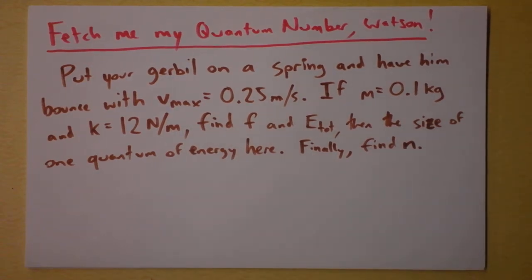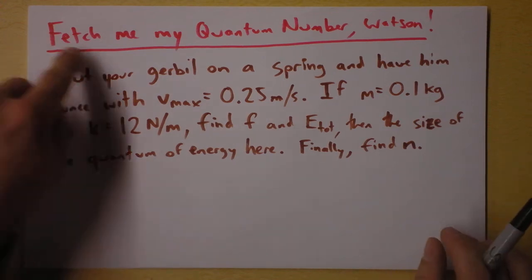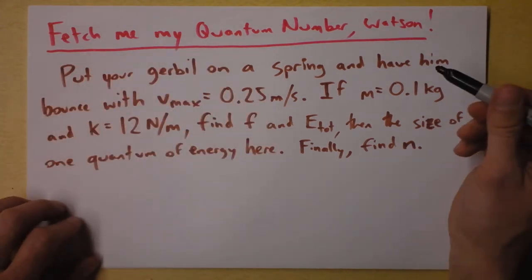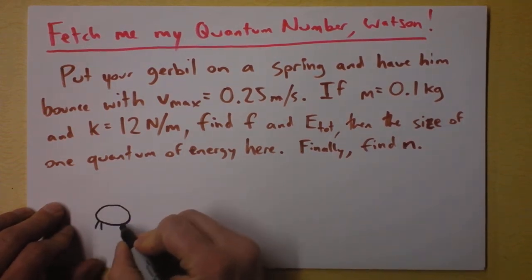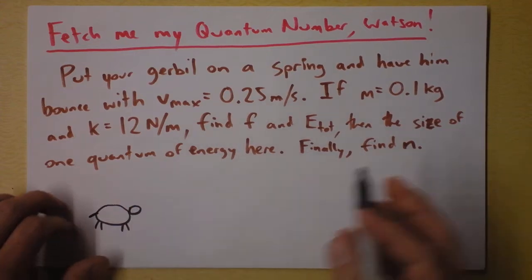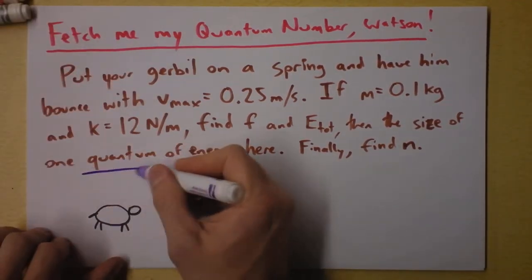Imagine somebody came up to you and told you that you could get a cruise to Canada if - hi Canadians, how you doing, eh? - if you could solve this problem. Fetch me my quantum number, Watson. Put your gerbil on a spring. And we all know that gerbils have four legs and a head and probably a tail, and we're supposed to put them on a spring. Here we go.